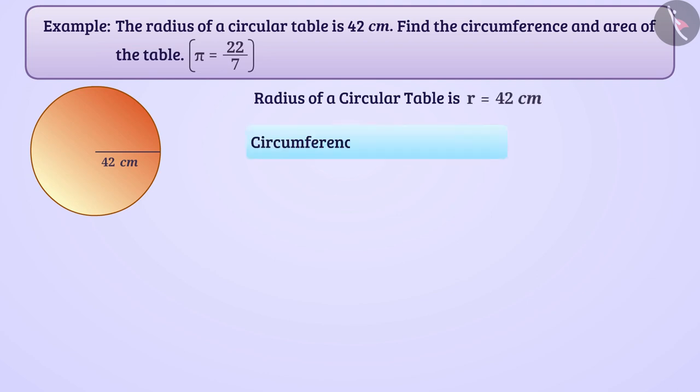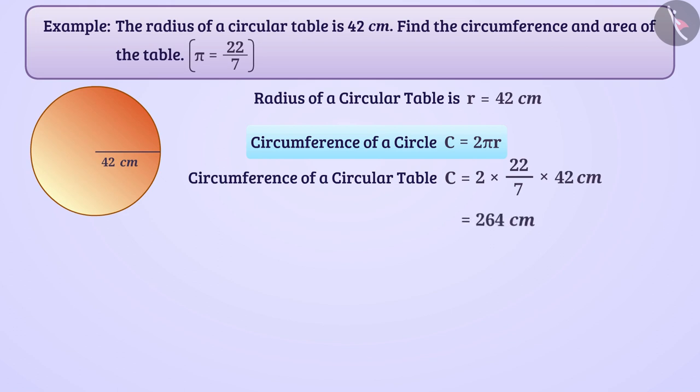Since the circumference of a circle is C = 2πr, hence the circumference of circular table is 2 × 22/7 × 42 cm = 264 cm. Similarly,